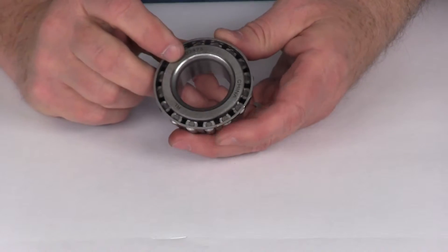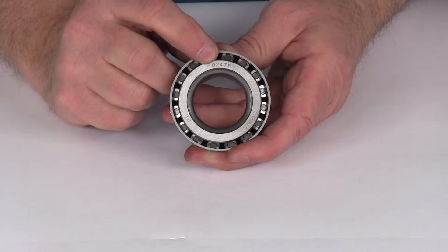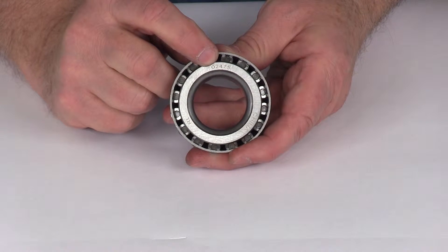All bearings will be stamped with the industry standard numbers on them regardless of the brand. You can see right here, there's the 02475.